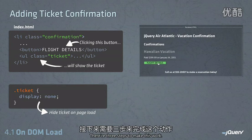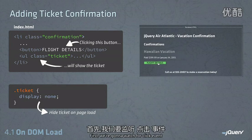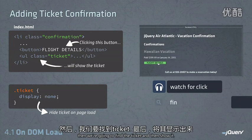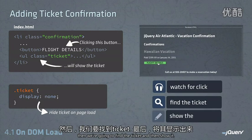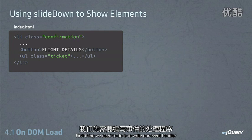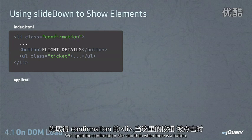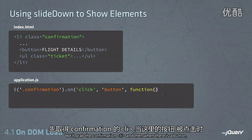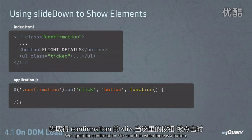There are three steps to making this work. First, we're going to watch for the click event, then we're going to find the ticket, and then show it. The first thing we need to do is write our event handler. We'll grab the confirmation li, and then when there's a button inside of that which gets clicked, we're going to run some code.